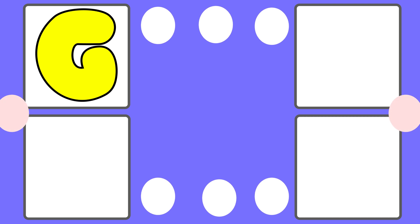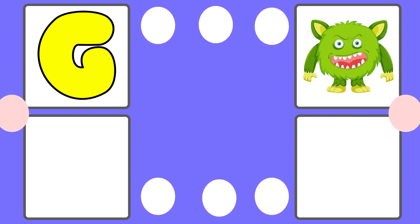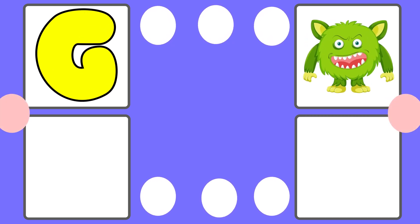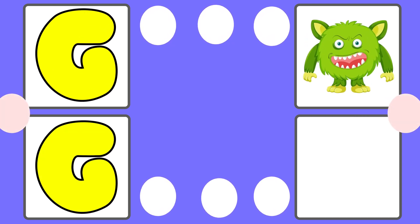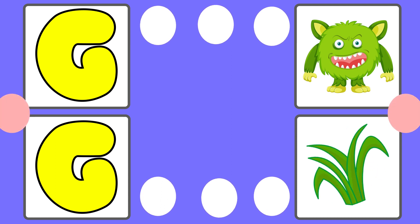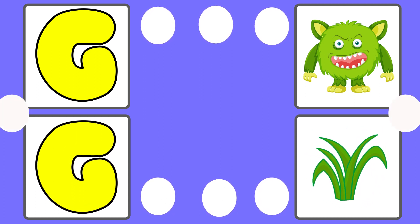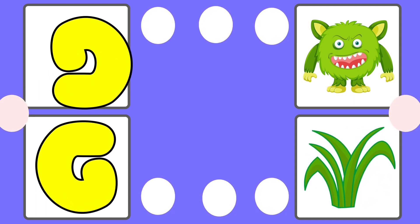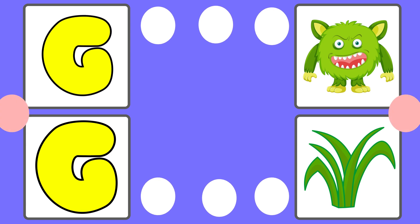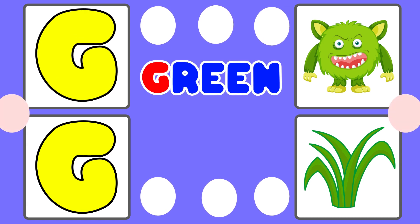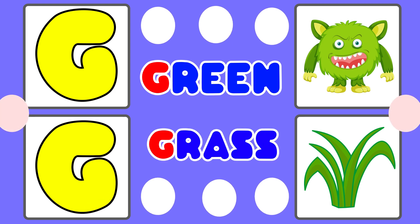G is for Green. G is for Grass. G is for Green. G is for Grass.